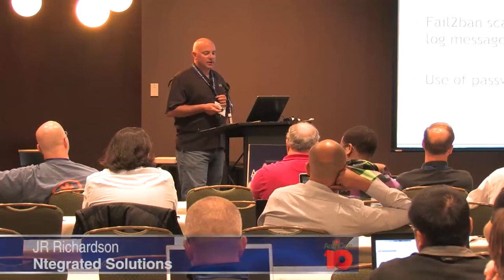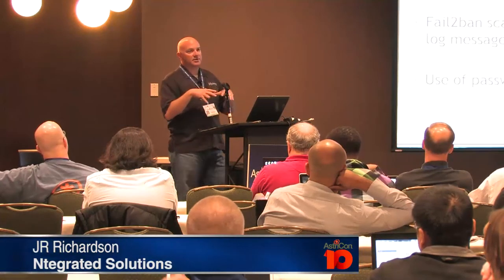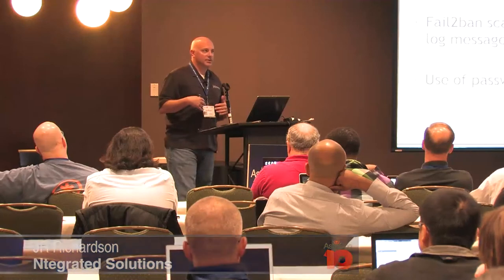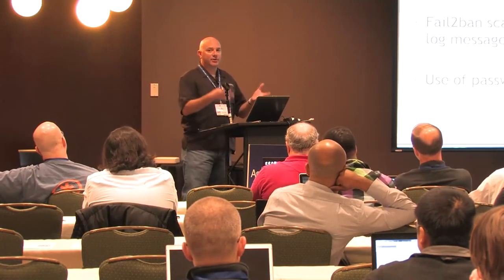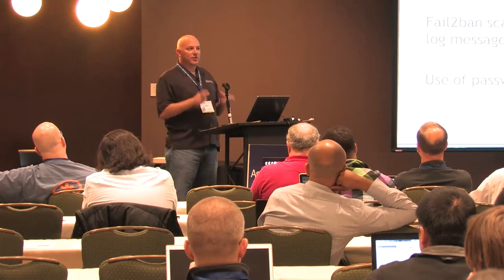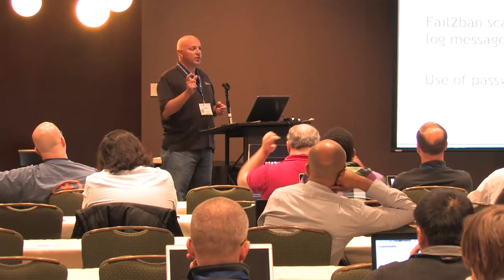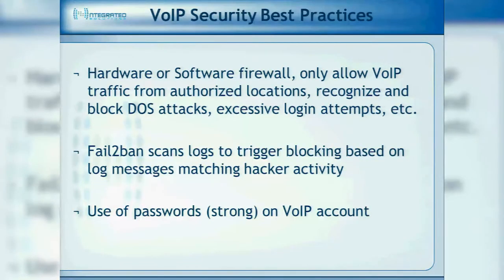Fail2ban scans logs. When the hacker is attacking your box, Asterisk — the PBX — is going to send log files saying 'wrong password' or 'does not match ACL.' You set up fail2ban to scan your log files, and when it gets a specific hit, it takes an action. Use of strong passwords is paramount. Extension enumeration is going to happen, so you have to be very dynamic with your passwords — 1234 is not a good password.